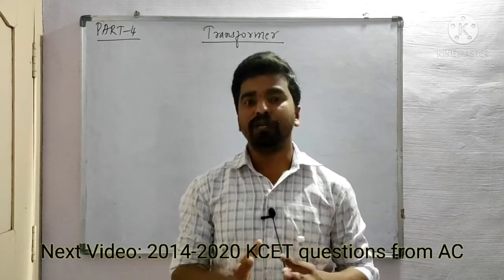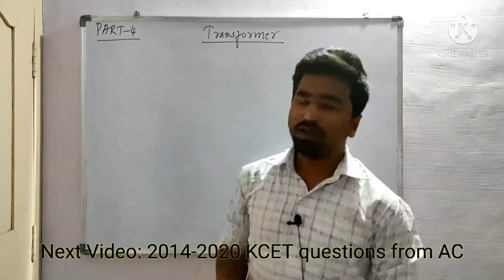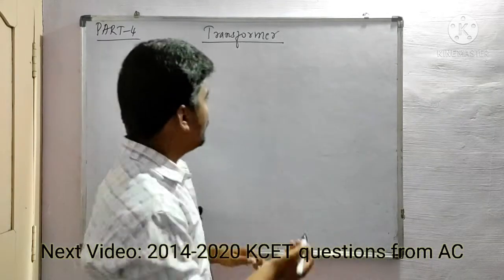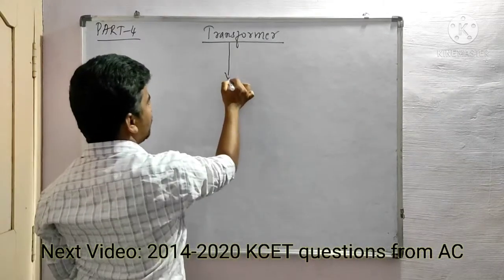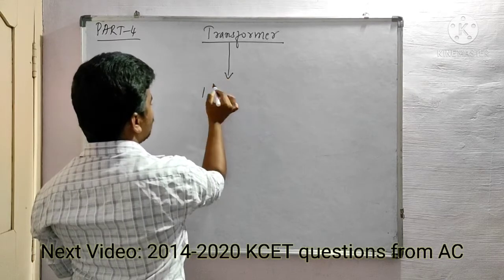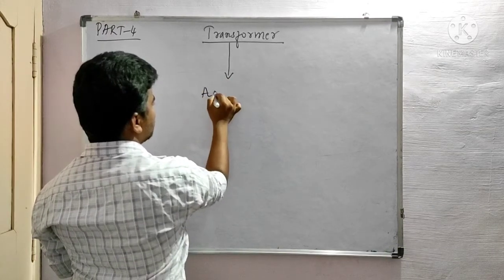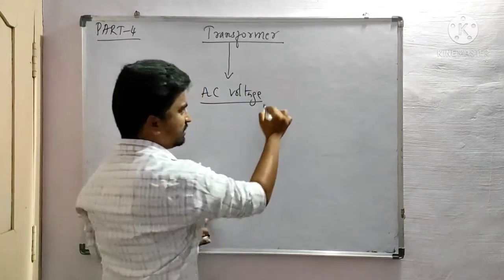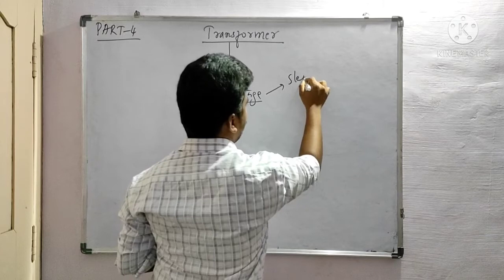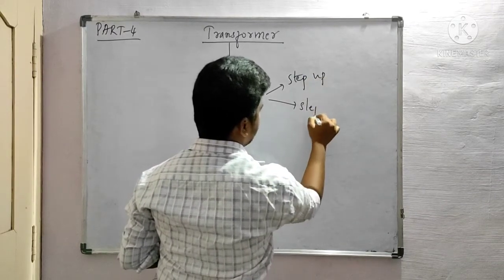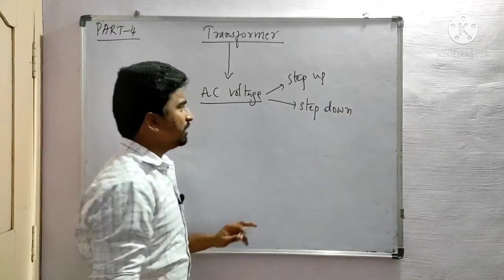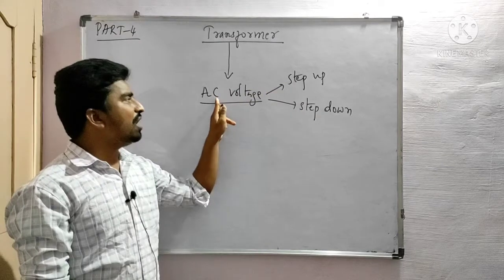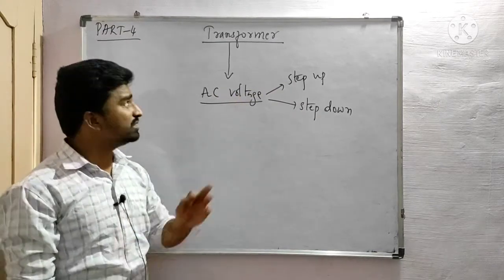Now the last topic of AC current is the transformer. A transformer is a device which is used to increase or decrease the alternating voltage — that is called stepping up or stepping down the voltage. This device is called a transformer.